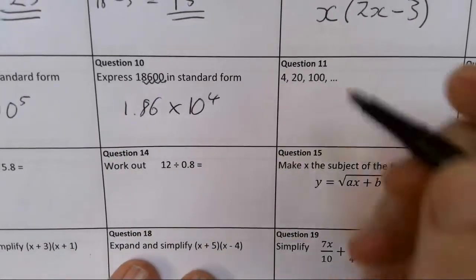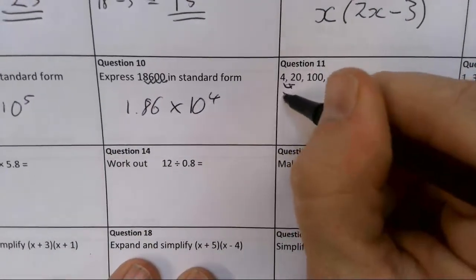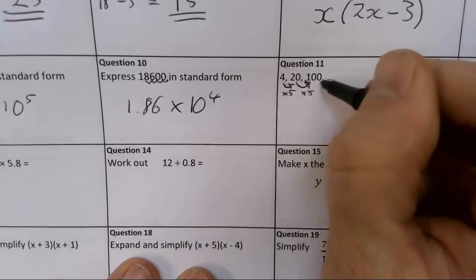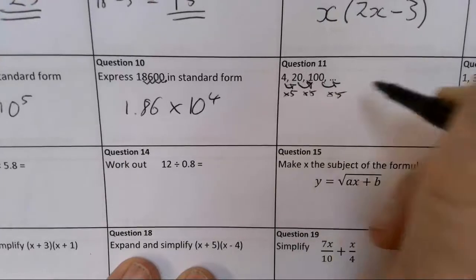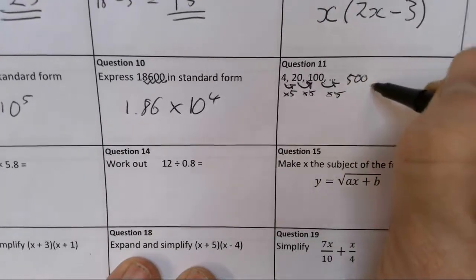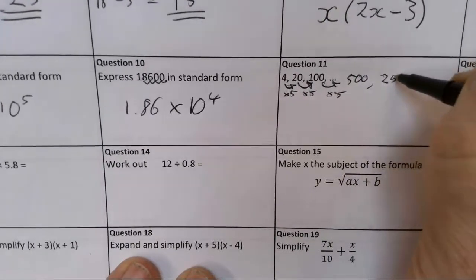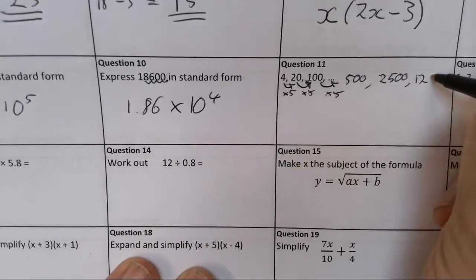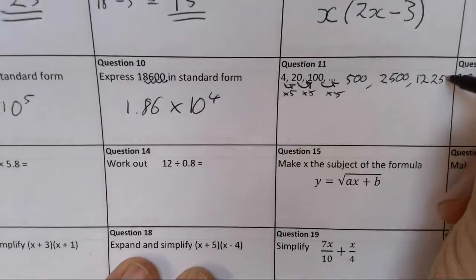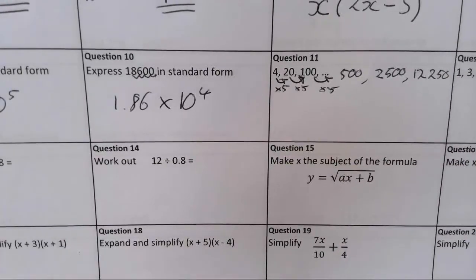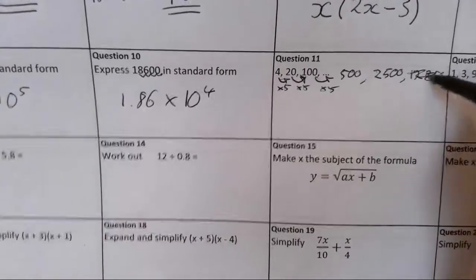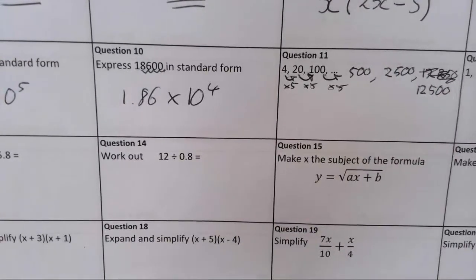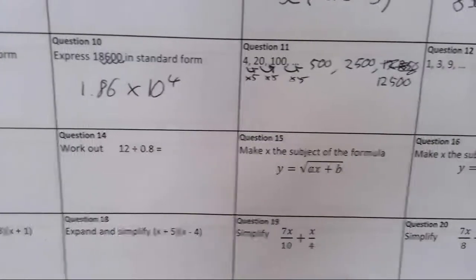Geometric progression continuation. So we know that we have the common ratio which we're multiplying by each time. In this case it's 5. So my next one's going to be 500, my next one's going to be 2,500, and my next one's going to be 12,500. Is that right? No. 12,500. Careful. Please pull me up if I do make a silly error like that.